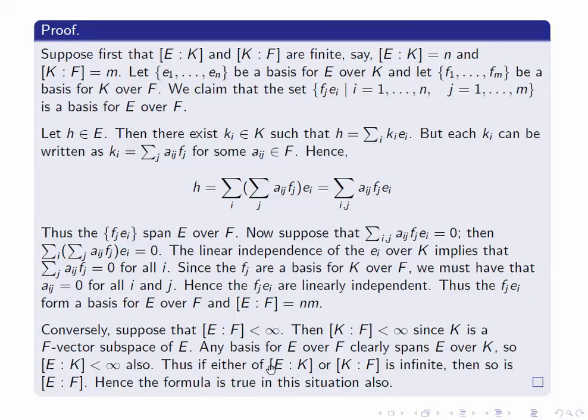If either [E:K] or [K:F] is infinite, then [E:F] must also be infinite. So this proves the formula in that case too. If either of these things is infinite, then the left-hand side is also infinite. That proves the theorem. That's all there is to it. Let's have a quick look at an application.